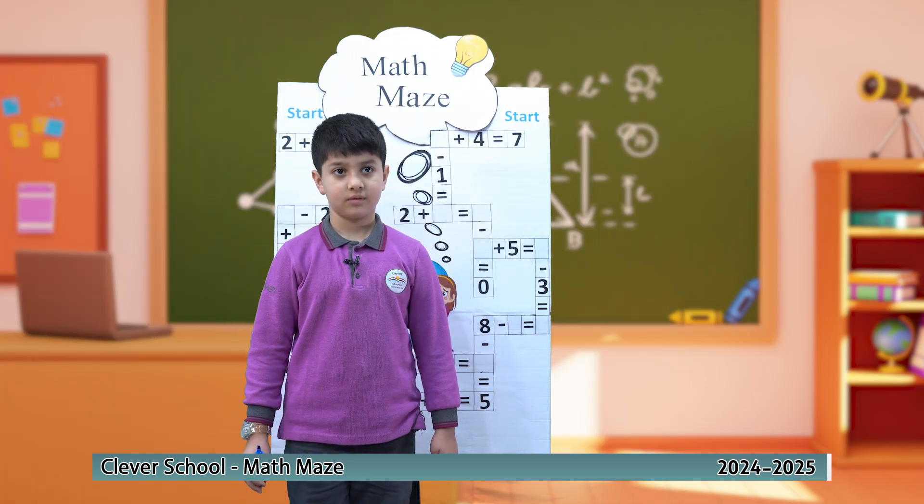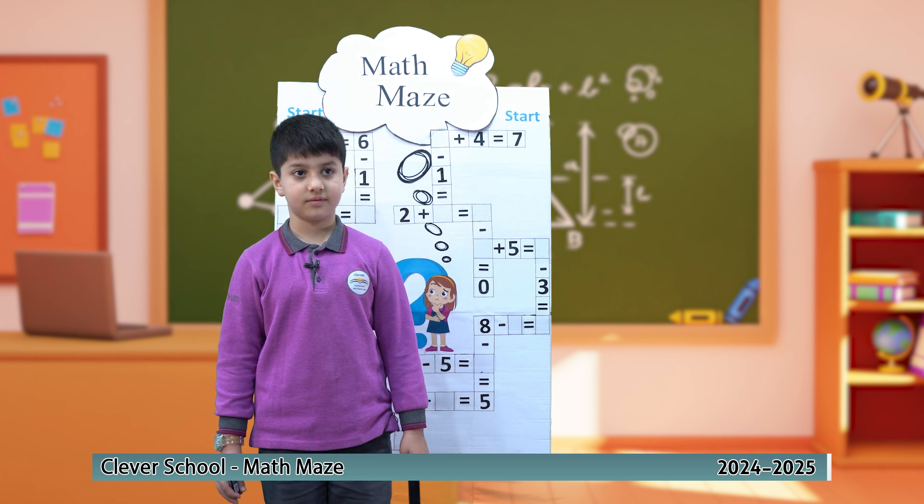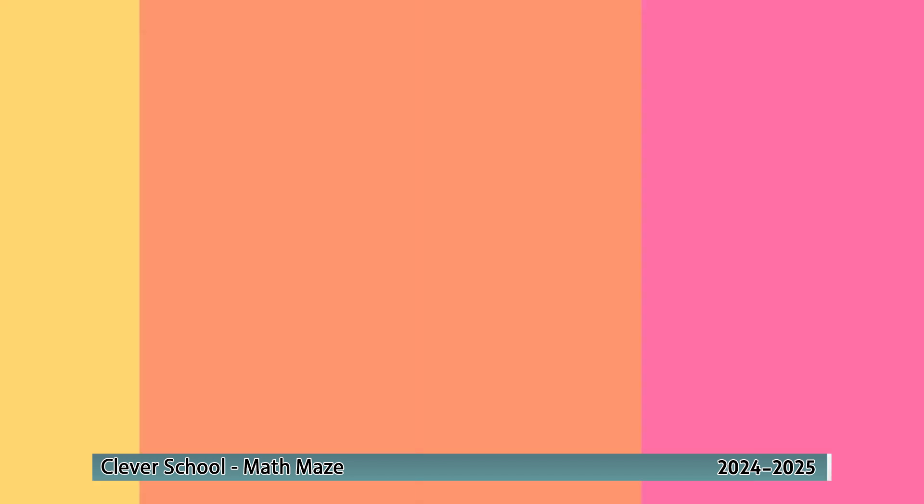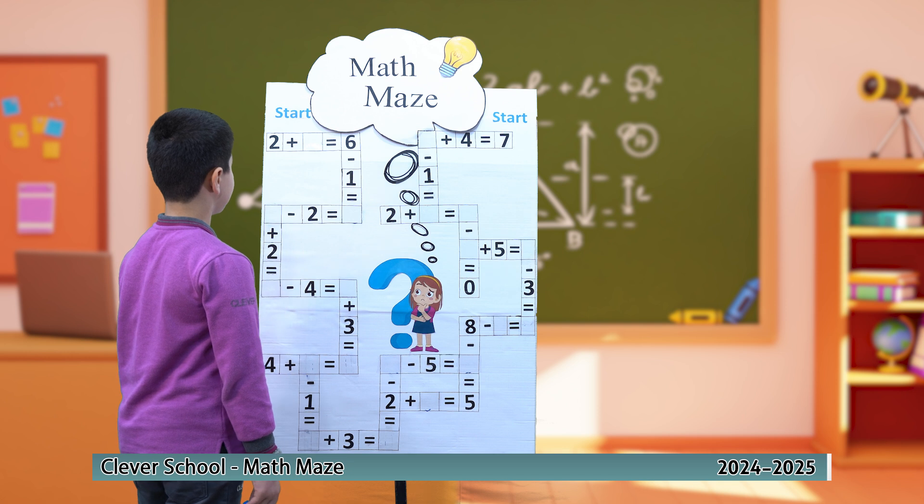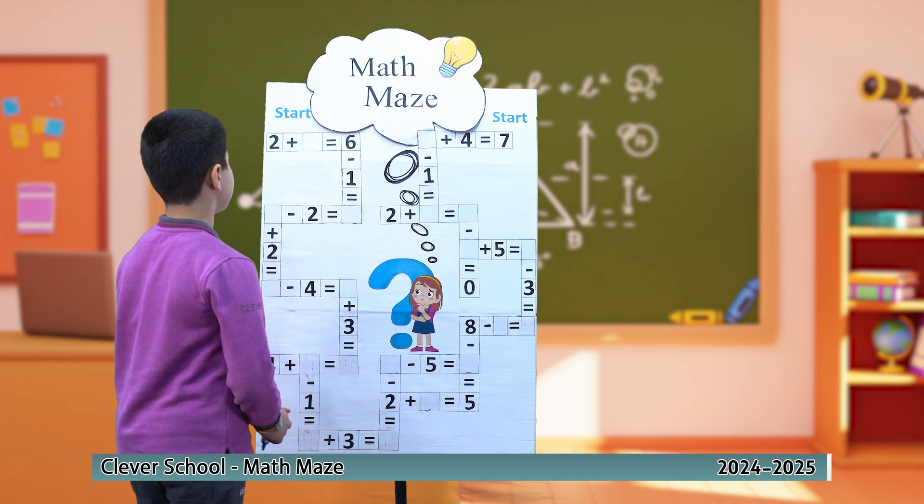So for first focus, what number can we add to number 2 to make 6? The answer is 4. 2 plus 4 equals 6.